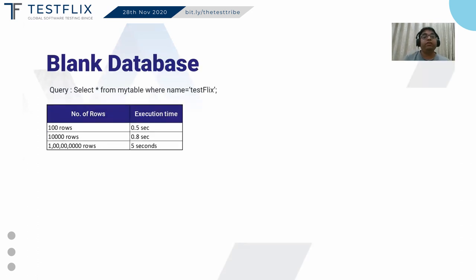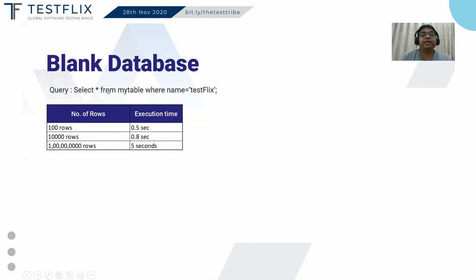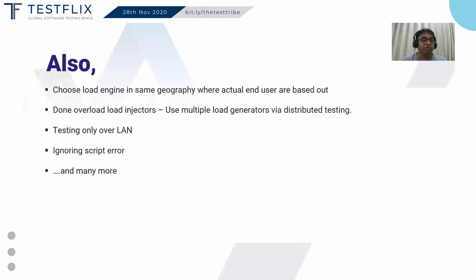Another mistake is testing with a blank or very small database. If in production there will be 1TB of data, but in your staging environment you're using only 100 or 1000 records, results will be misleading. For example, a query like 'SELECT * FROM my_table' with 100 rows might return in 0.5 seconds, but with one million rows it could take 5 seconds. So we need to test with a data volume that matches what we expect in production.